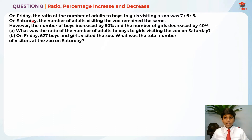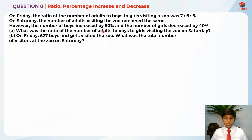On Saturday, the number of adults visiting the zoo remained the same. However, the number of boys increased by 50% and the number of girls decreased by 40%. Part A: what was the ratio of the number of adults to boys to girls visiting the zoo on Saturday?